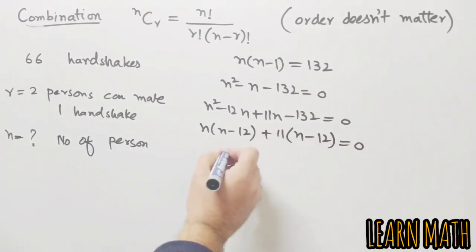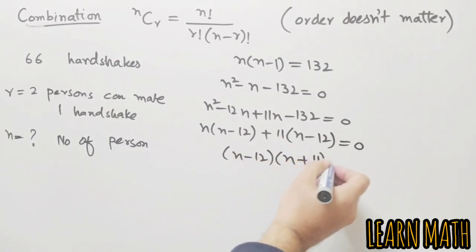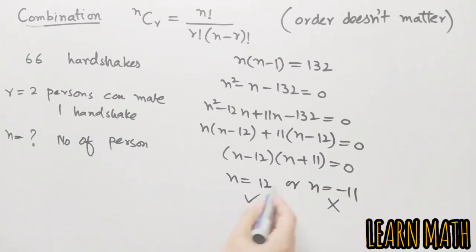Taking n common, n minus 12 plus 11 into n minus 12 is equal to 0. n minus 12 into n plus 11 is equal to 0. n is equal to 12 or n is equal to minus 11. So we will cancel the negative and choose positive because the number of persons cannot be negative, and the number of persons here is 12.